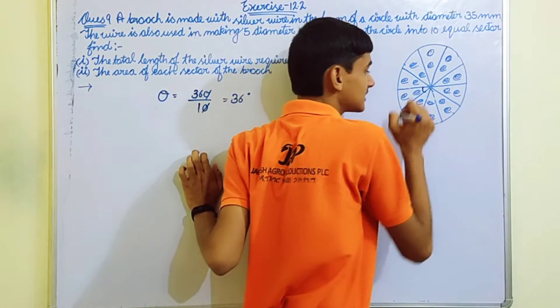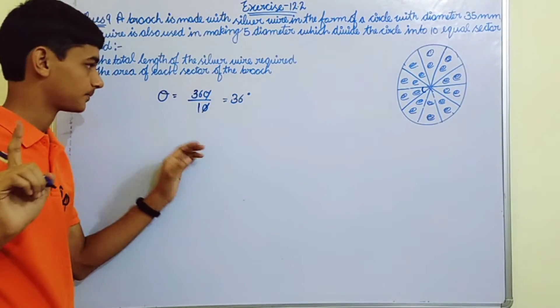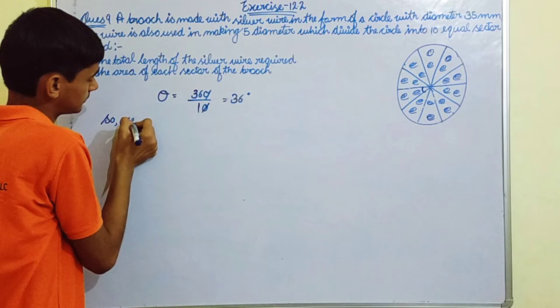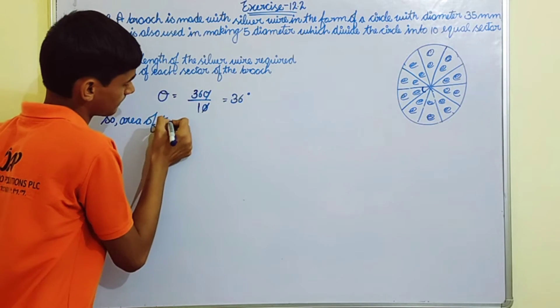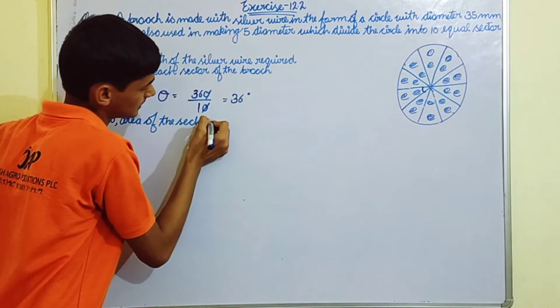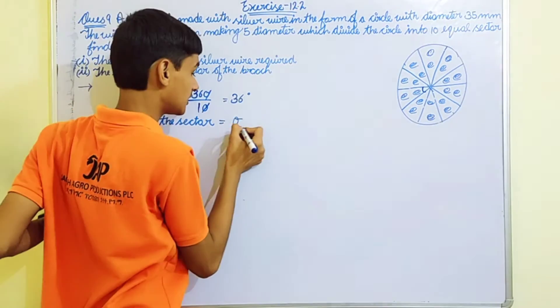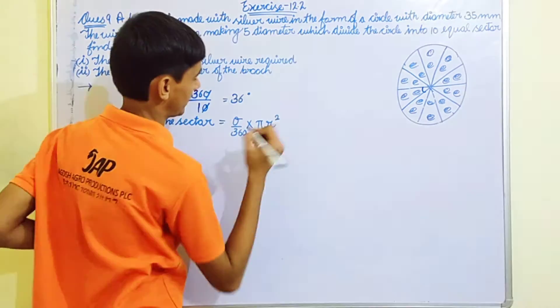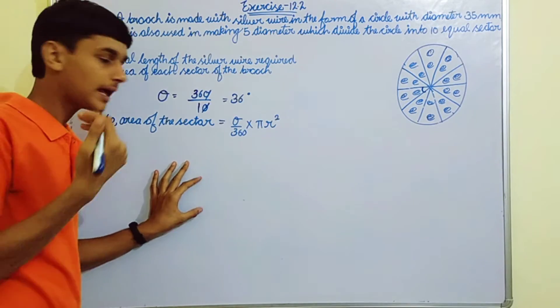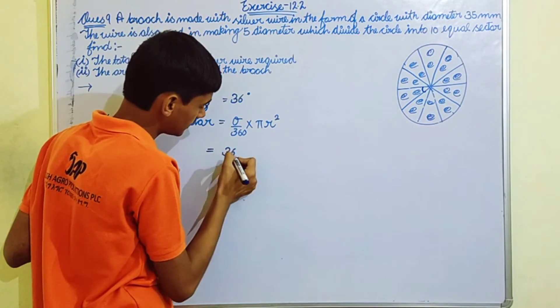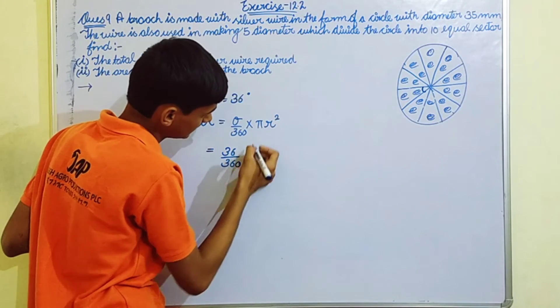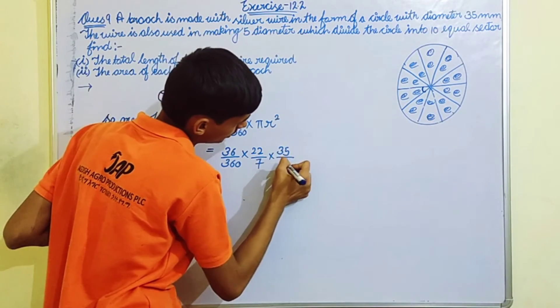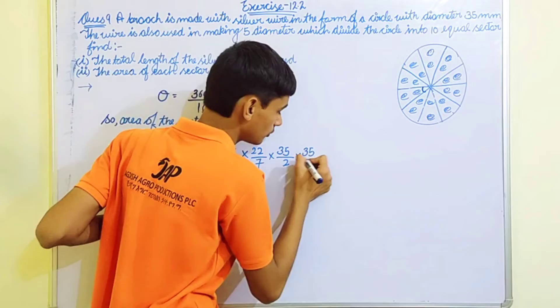Area of the sector is equals to theta by 360 into πr². This is the formula everyone knows. Apply it. Theta value is 36 divided by 360 into 22 by 7 times r, which is 35 by 2 times 35 by 2. After canceling, 36 becomes 10.